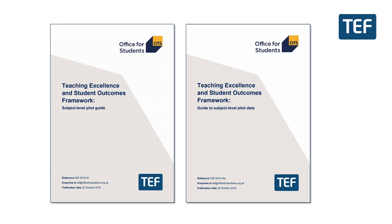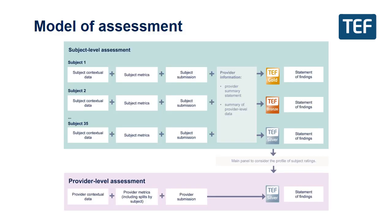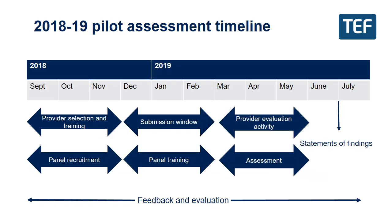The second pilot was informed by the consultation, the findings from the first pilot, and that student research. A series of design workshops were conducted over the summer of 2018 to inform how it would be operationalised. The revised model consolidates the best features of the two models tested in the first pilot and seeks to address a number of issues identified. It is comprehensive in that it assesses all provision in the university or college — each subject is assessed, and in parallel so is the university or college as a whole. The pilot has two broad strands of work: one focused on providers and submissions, and one focused on panellists and assessment.